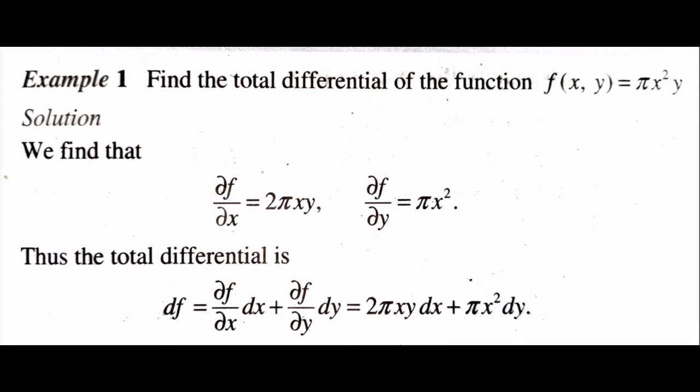Our first example: find the total differential of the function f(x, y) = πx²y. The solution is as follows. We find ∂f/∂x — differentiating with respect to x, keeping y constant — then ∂f/∂x = 2πxy.